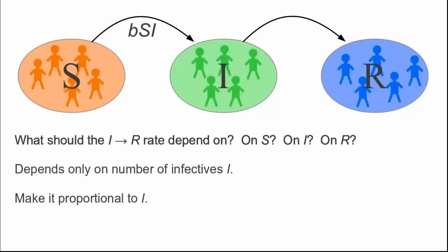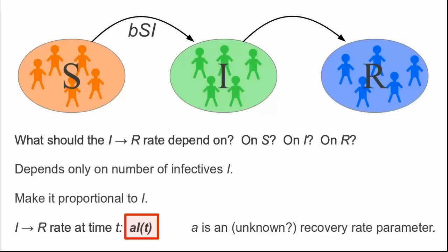We imagine that the rate at which infectives recover depends only on the number of infectives. If each infective will recover at the same rate, then the rate of recovery should be proportional to I, the number of infectives. We can let the parameter A be the constant of proportionality so that the recovery rate is A times I.